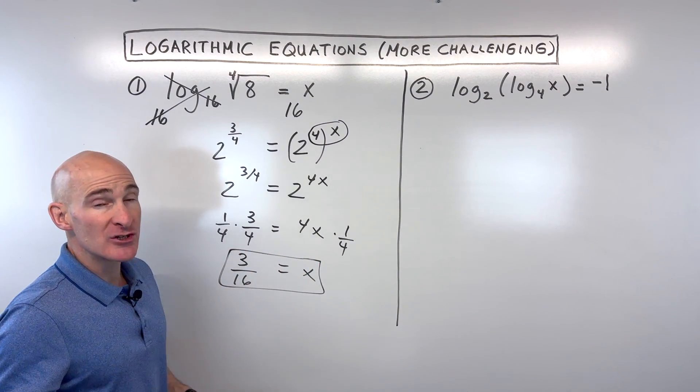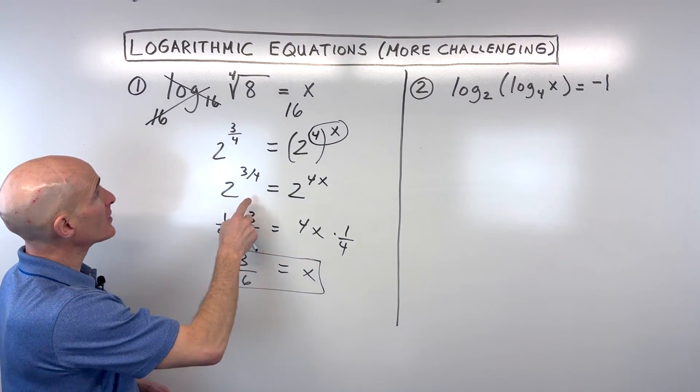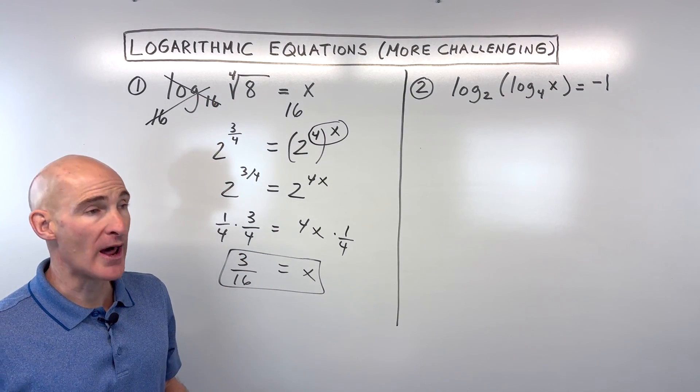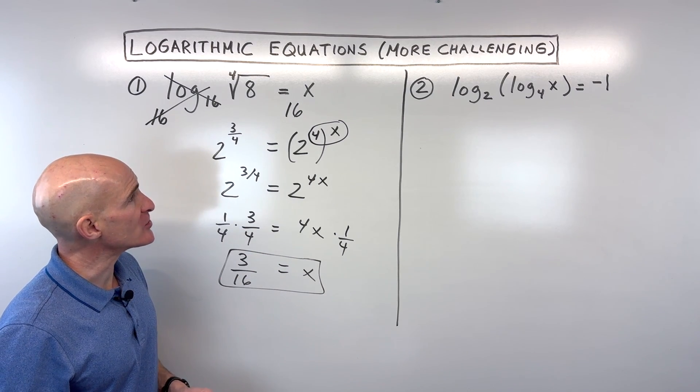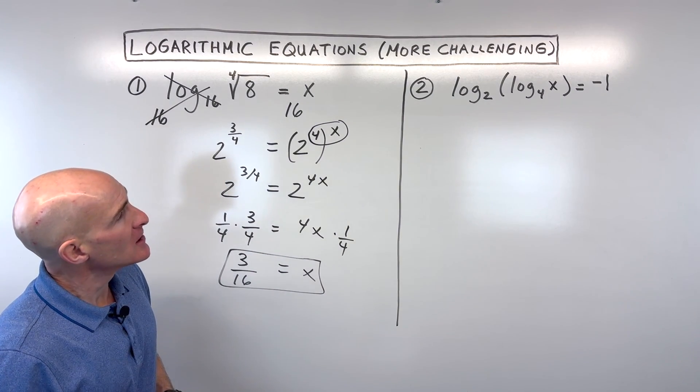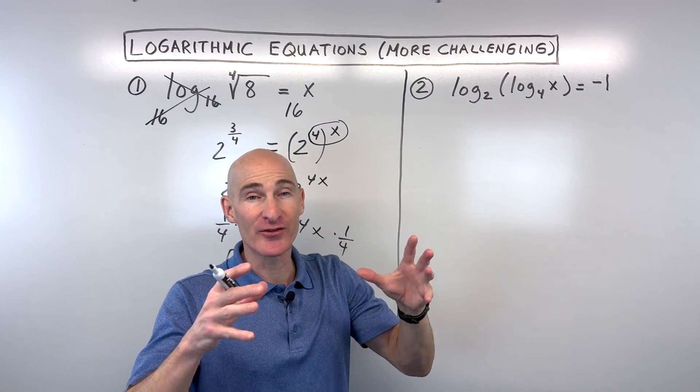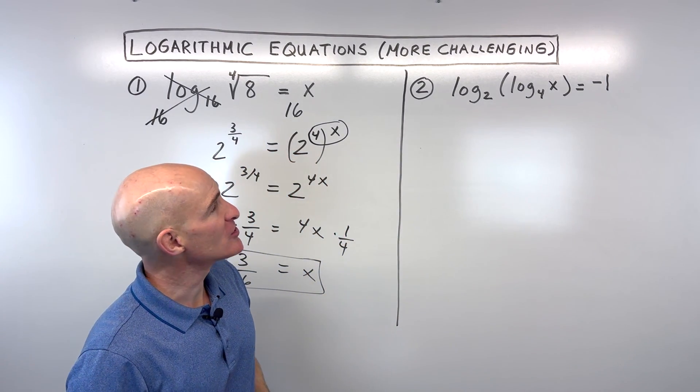With logarithmic equations, you always want to go back and just quickly check to make sure that you're not taking the log of a zero or a negative quantity. But that's not the case here. So let's look at number two now. Here this is kind of interesting because we have like a log inside of another log. So how would you solve that one?